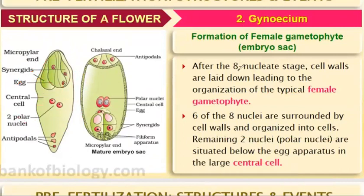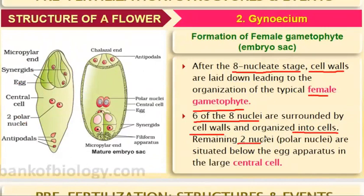Once the eight-nucleate stage is reached, cell walls are laid down, leading to the organization of a typical female gametophyte. Six of the eight nuclei are surrounded by cell walls and organized into cells. The remaining two nuclei are polar nuclei, situated below the egg apparatus in the central cell.